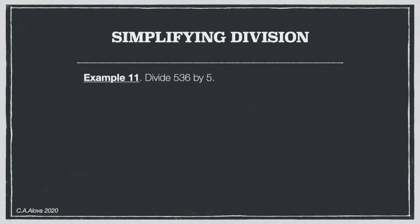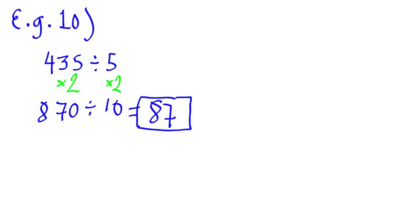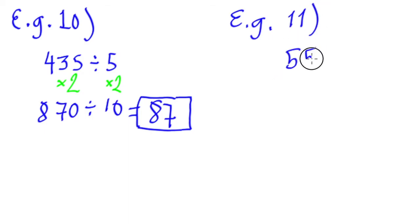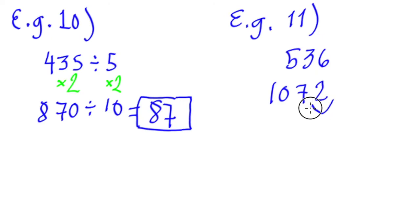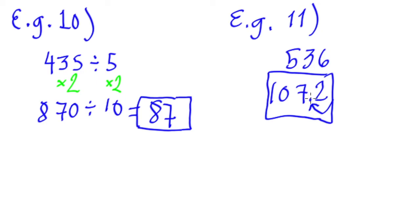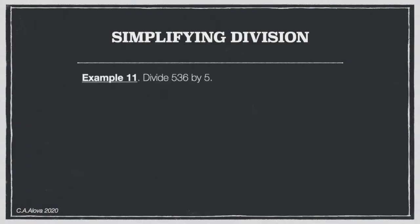Example 11: Divide 536 by 5. We double 536: 6 times 2 is 12, so we get 1072. Then move the decimal point one place to the left: 107.2. So 536 divided by 5 equals 107.2.